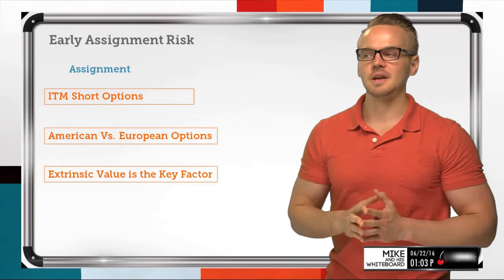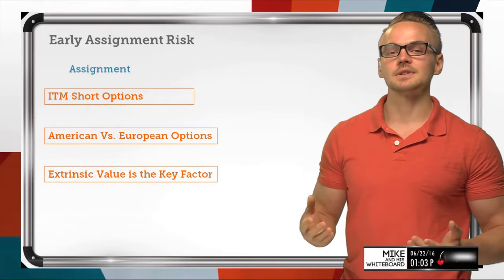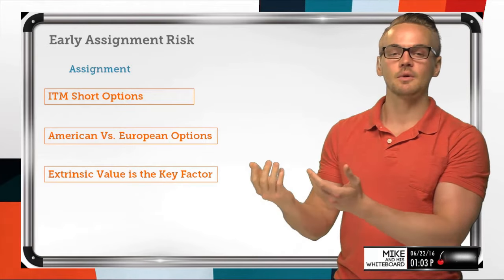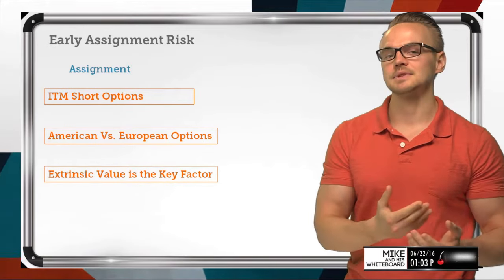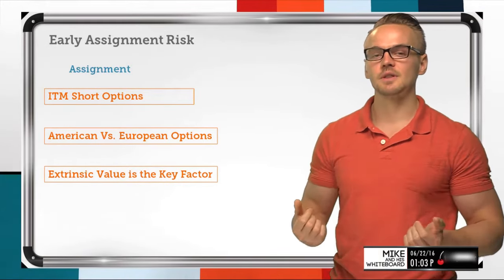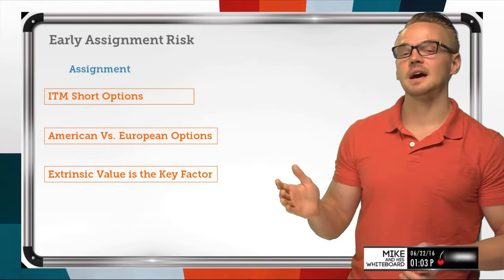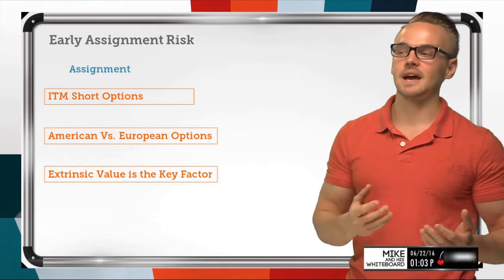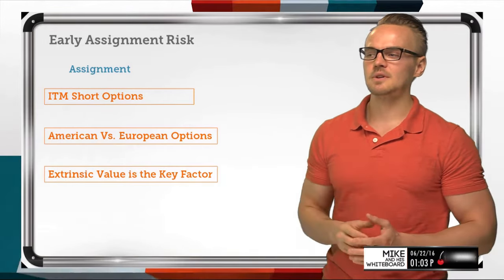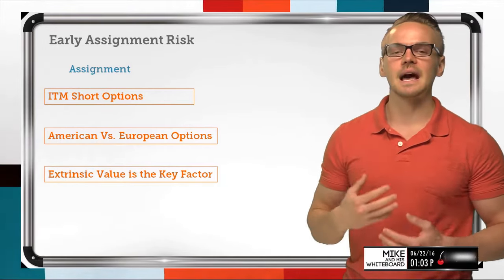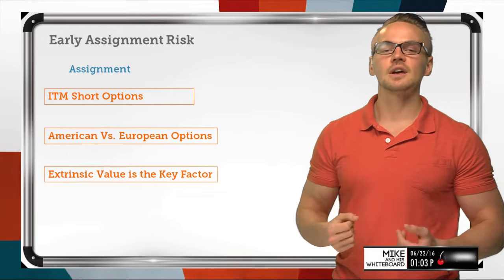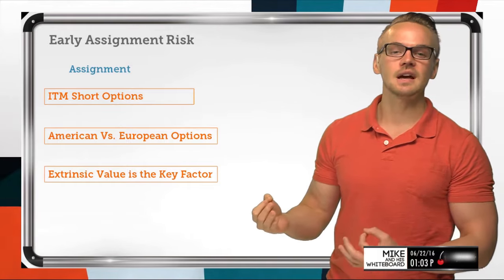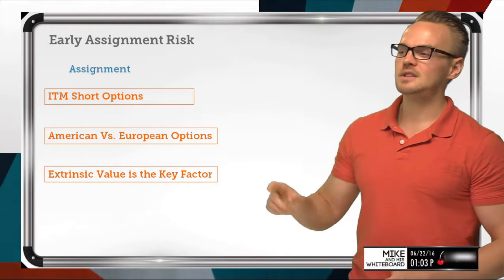There's also a differentiation between American versus European options. An American option is going to act and perform very differently than a European option. We'll break down the differences between those and give you some examples of European options, which are really the ones we don't have to worry about in terms of early assignment prior to expiration. Lastly, we're going to talk about extrinsic value and why that's the key factor to determining whether we're at risk of early assignment.